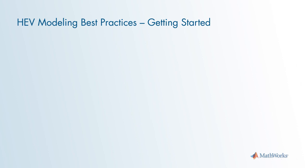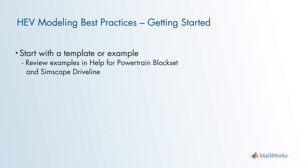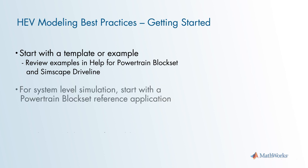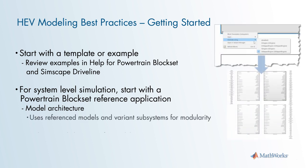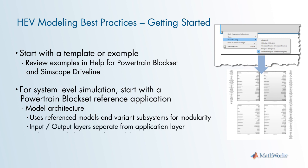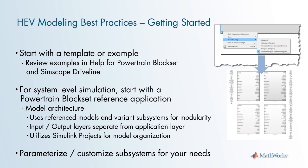Now let's discuss best practices for getting started. When starting for the first time, use a template or example from the help menu as already shown. Review examples in the help menu for the Powertrain Blockset and Simscape Driveline. For system-level simulation, start with a Powertrain Blockset reference application, because these provide a good foundation of system-level model architecture — the controller and plant connections are already provided, it uses reference models and variant subsystems for modularity, input/output layers are separate from the application layer, and it uses Simulink projects for model organization. You can re-parameterize and customize these reference applications to meet your needs.